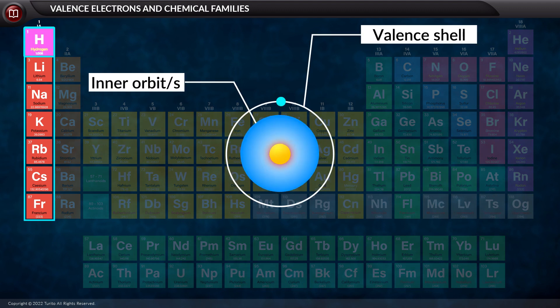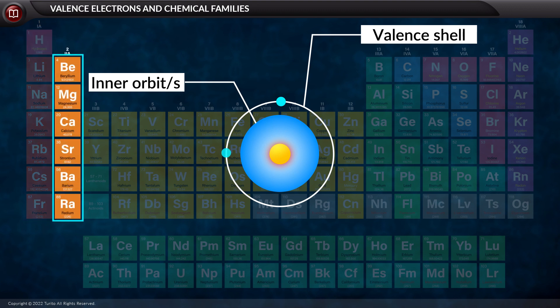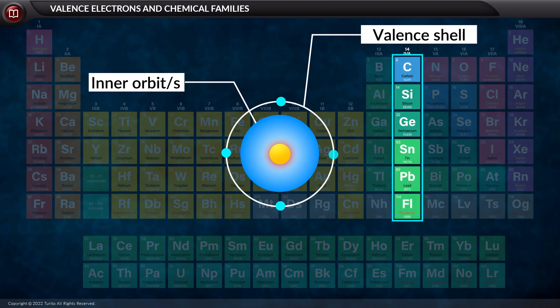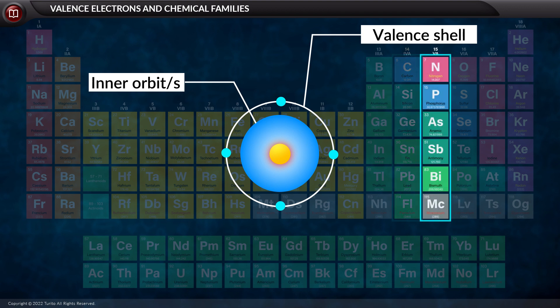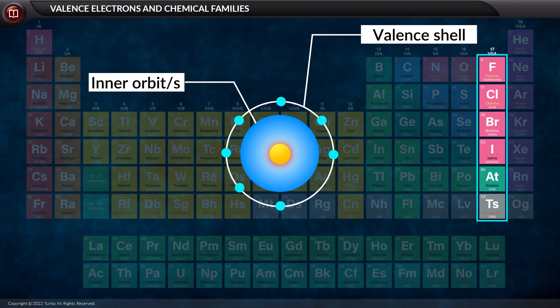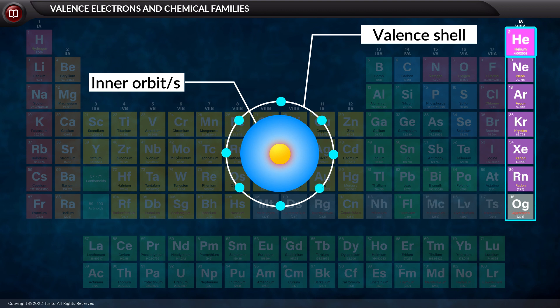The alkaline earth metals have two electrons in the valence shell. Boron family members have three electrons. Carbon families have four electrons. Nitrogen family have five electrons in the outermost shell. Oxygen family have six electrons. The halogen family has seven electrons in the outermost shell. And except helium, the noble gases have eight electrons in the outermost shell.